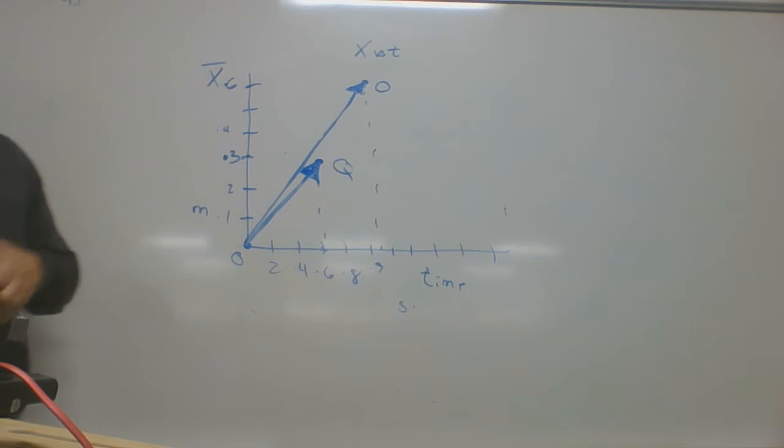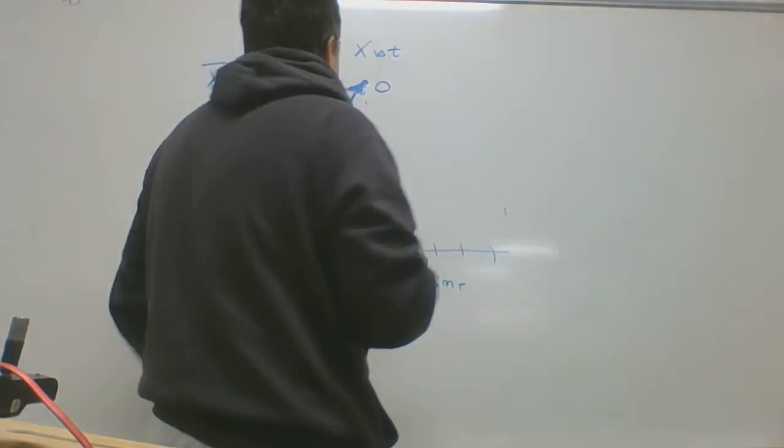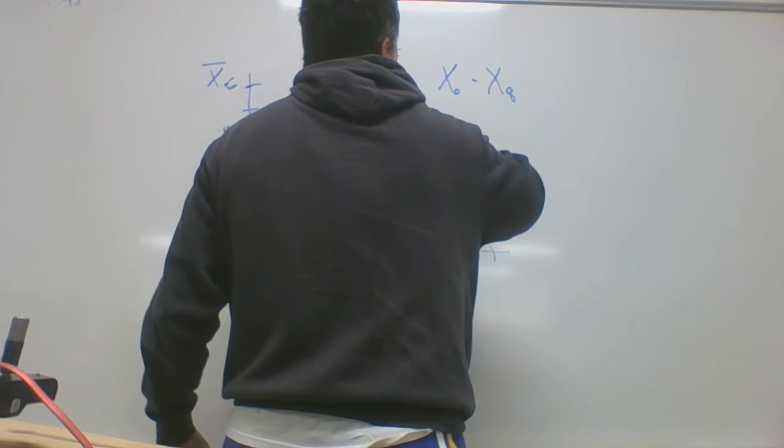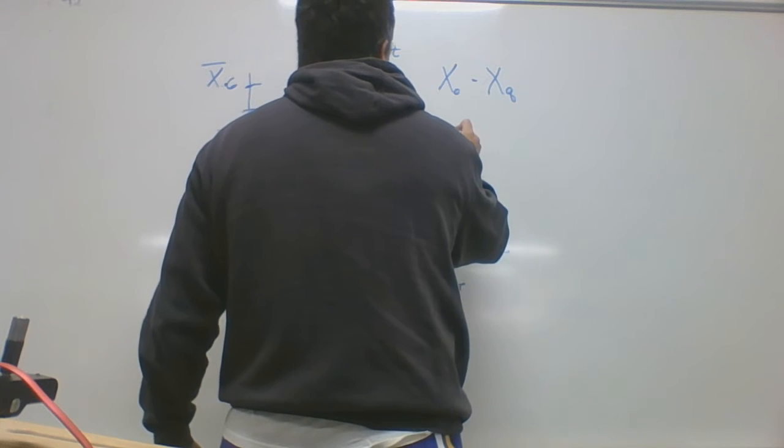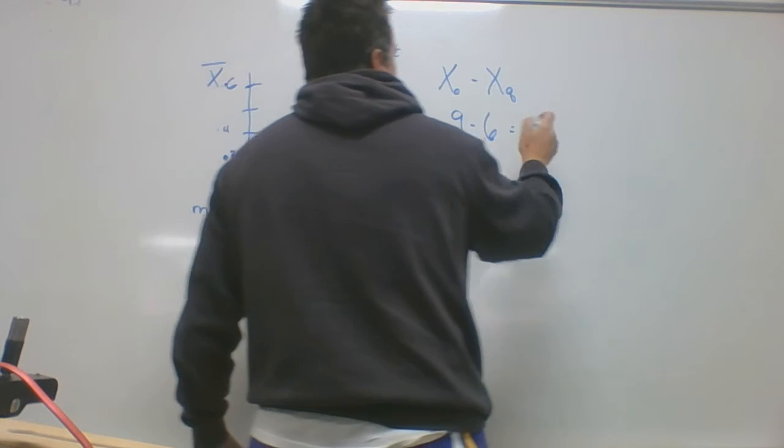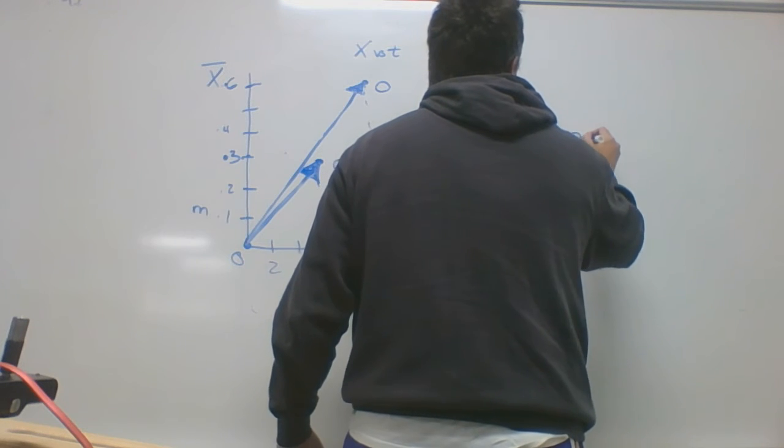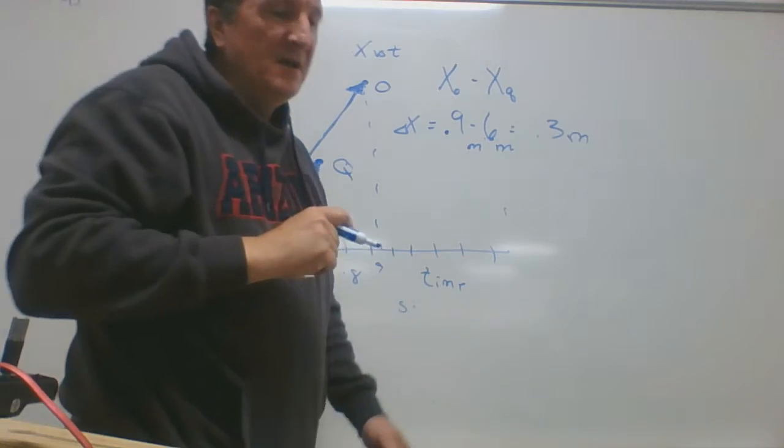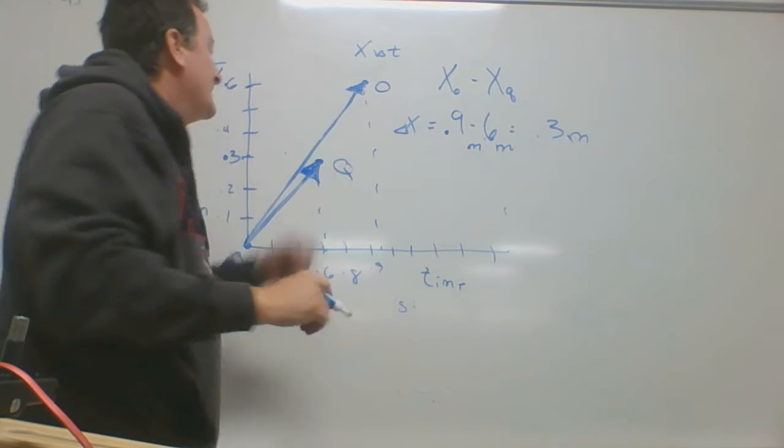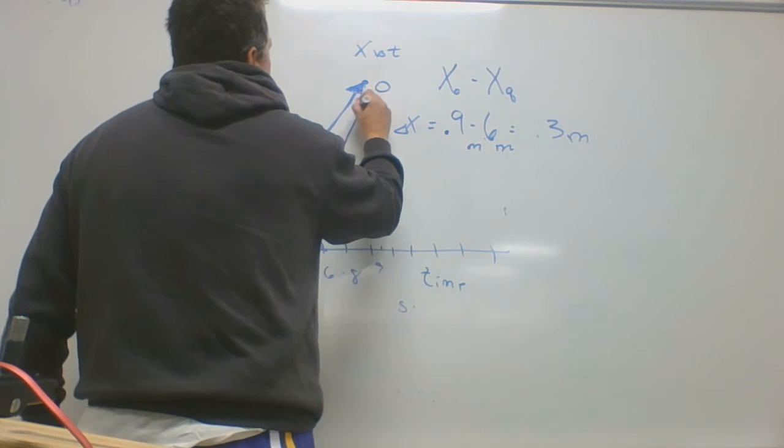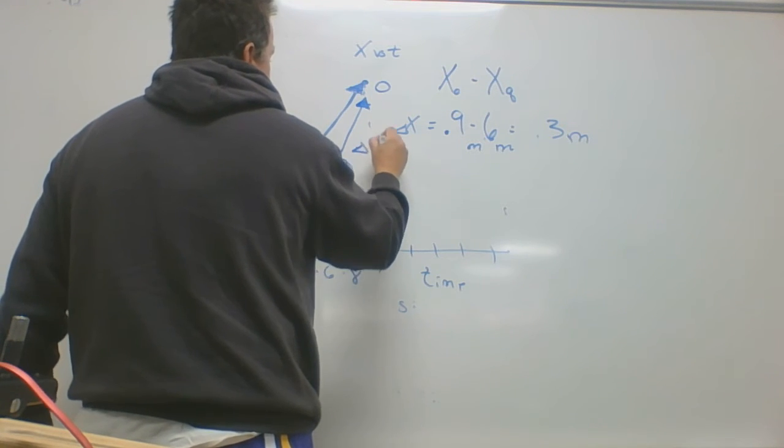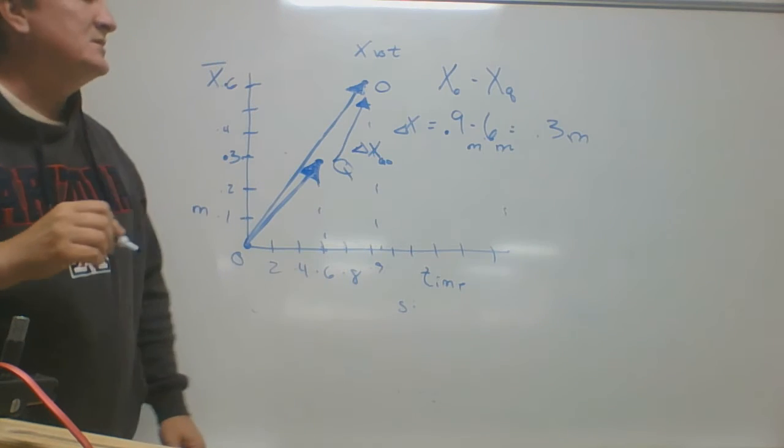If I want to find the displacement between those, I take the distance at O and take the distance from the position vector Q. That's going to be 0.9 minus 0.6, which is 0.3 meters. So the displacement from that car from Q to O is 0.3. That's also a vector, and we're going to call that vector displacement QO.